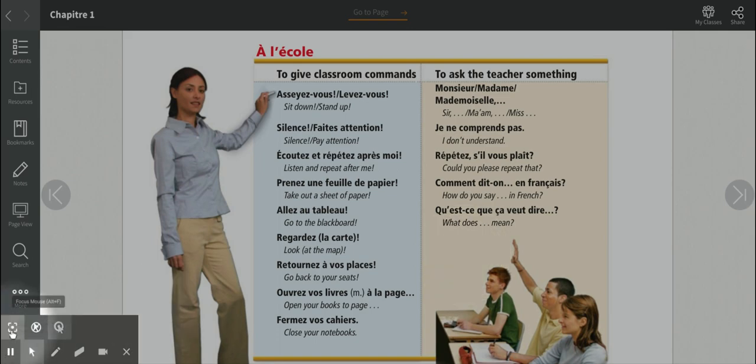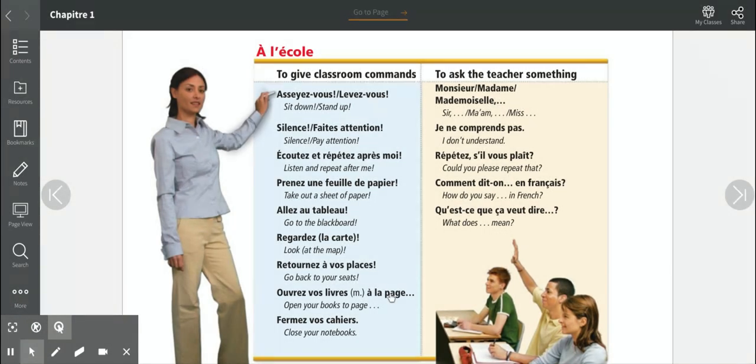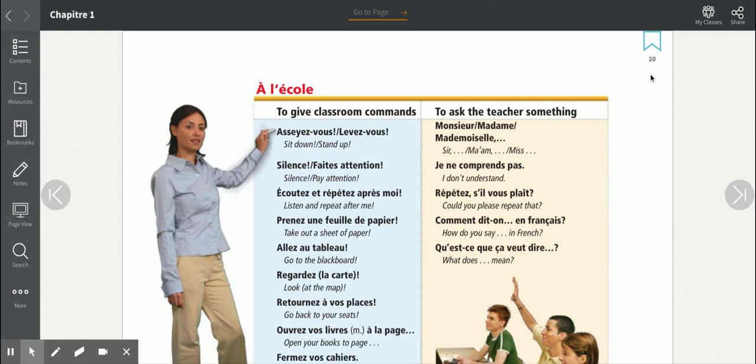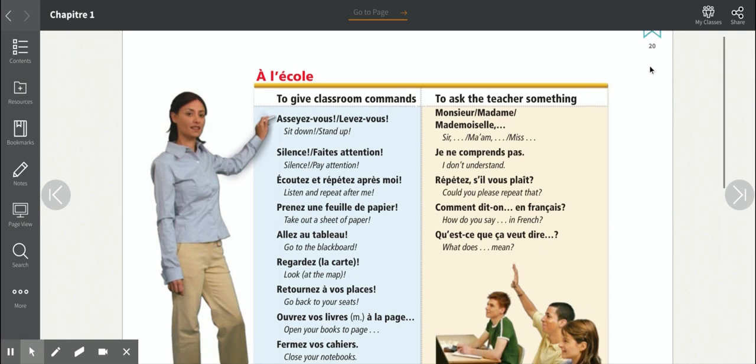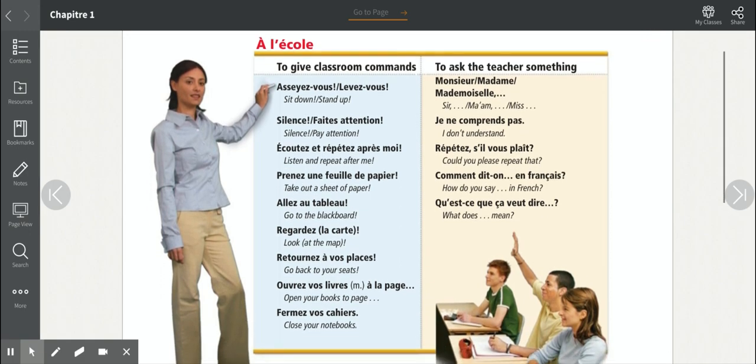So that's it for the vocab today. I'm going to turn off my highlighter. This vocab is found on page 20 of your online book. If you have any questions about this, please let me know. Your vocab quiz will be coming up next Monday. If you have any questions, let me know. Se tu et à plus.